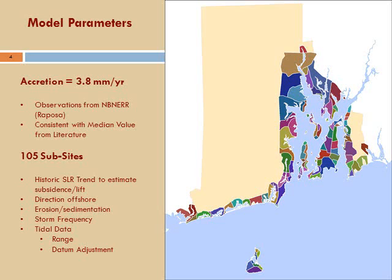To start the analysis, you need a bunch of variables and parameters for the model that Wen Li covered already. The first very important variable is the accretion rate — that's the rate at which material is gathered on the marsh to allow it to grow vertically and ideally keep up with sea level rise. For this model, we used an average number of 3.8 millimeters per year, obtained from the research reserve in Narragansett from Ken Raposa, which is consistent with an average value from the literature.